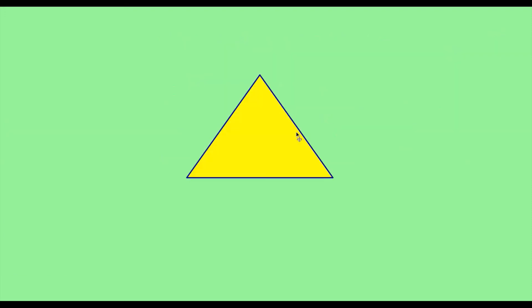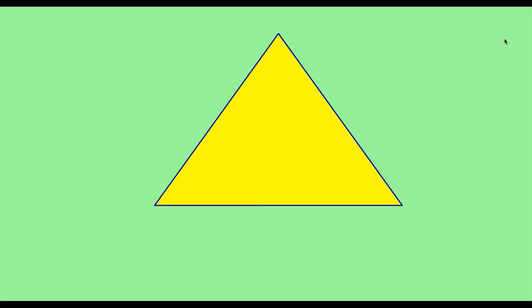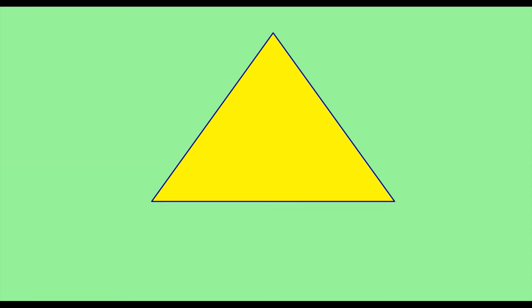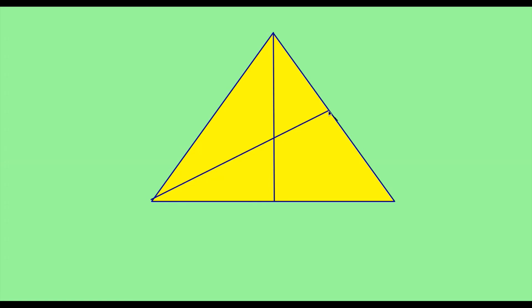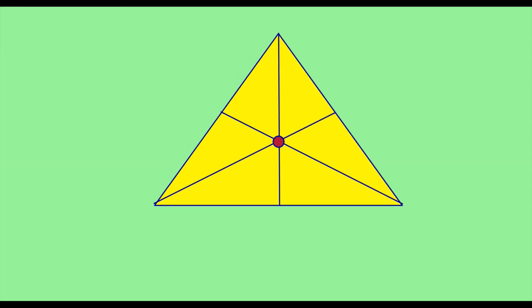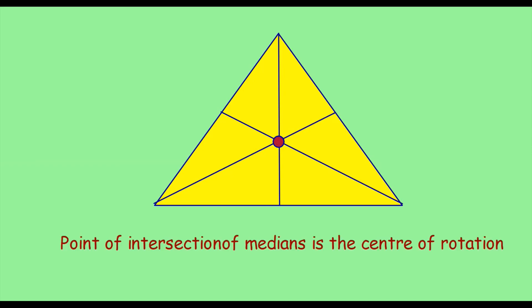Now what about an equilateral triangle? To find the center of rotation, you draw the medians — 1, 2, and 3. The point of intersection of the medians will be the center of rotation. So, the point of intersection of the medians is the center of rotation of an equilateral triangle.